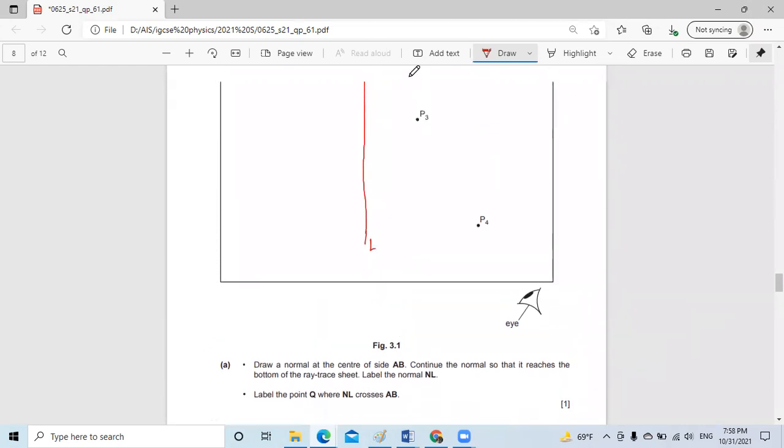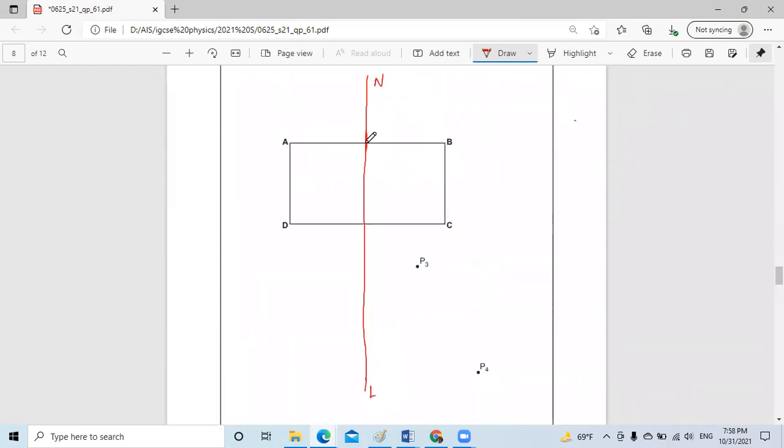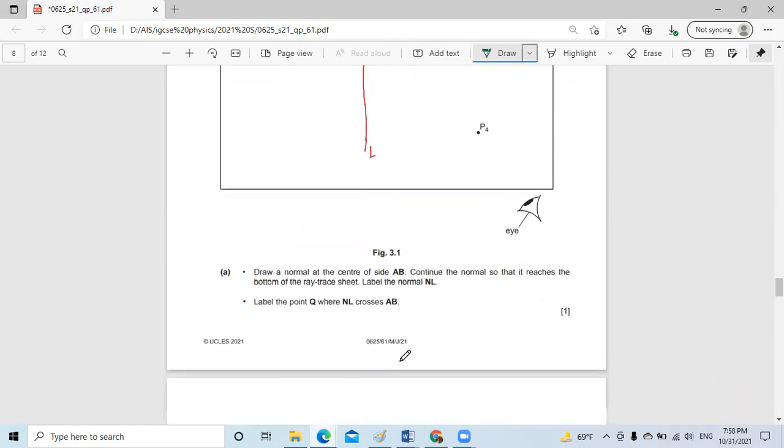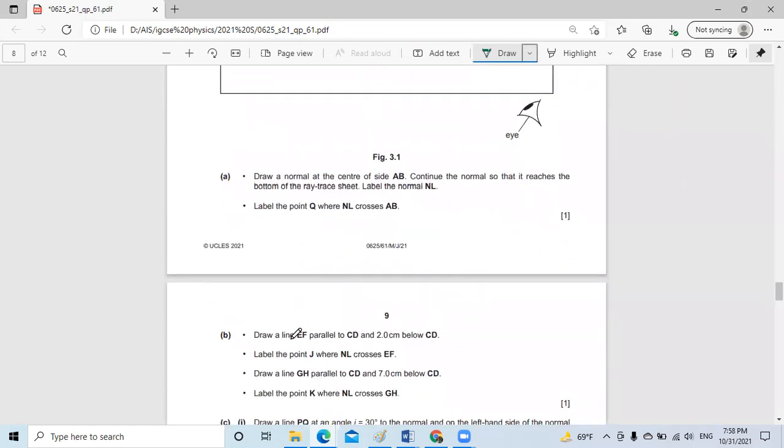So this is the point Q. I'll label it. I'll change the color so it will be more clear. This is Q in the middle between A and B exactly. This is one mark.